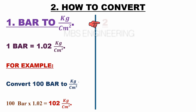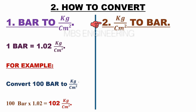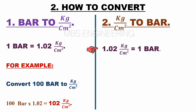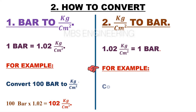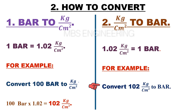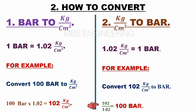Next, we will learn how to convert kilogram per centimeter square to bar. Please remember that 1.02 kilograms per centimeter square is equal to one bar. Sample example: convert 102 kilograms per centimeter square to bar. 102 divided by 1.02 — therefore the obtained pressure value is 100 bar.